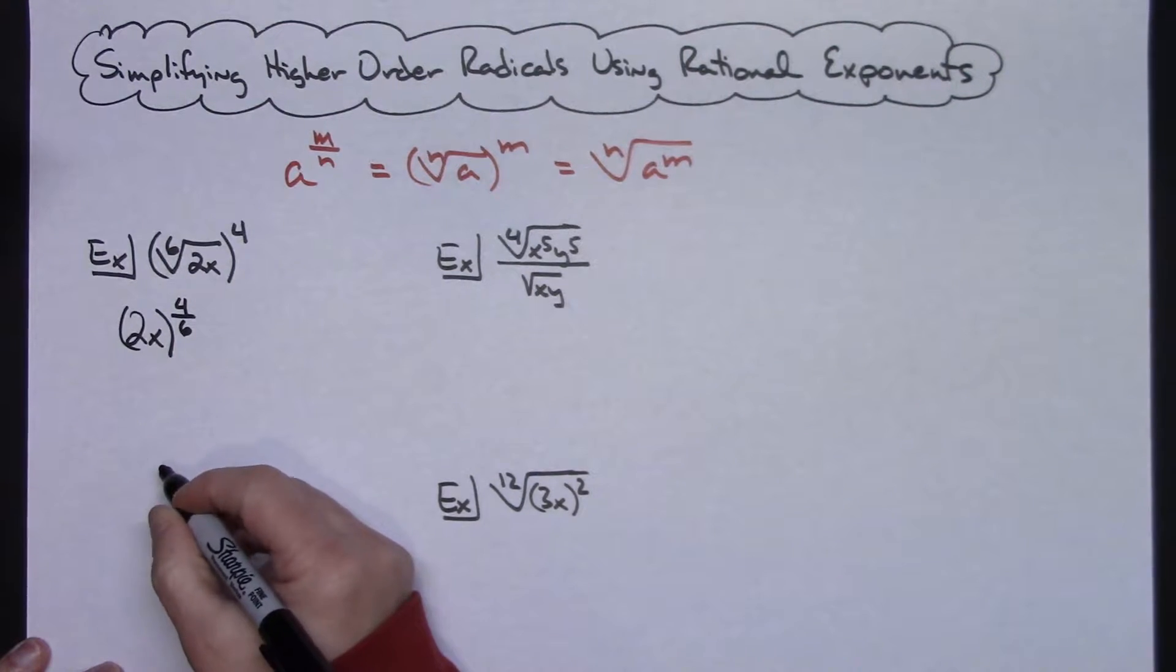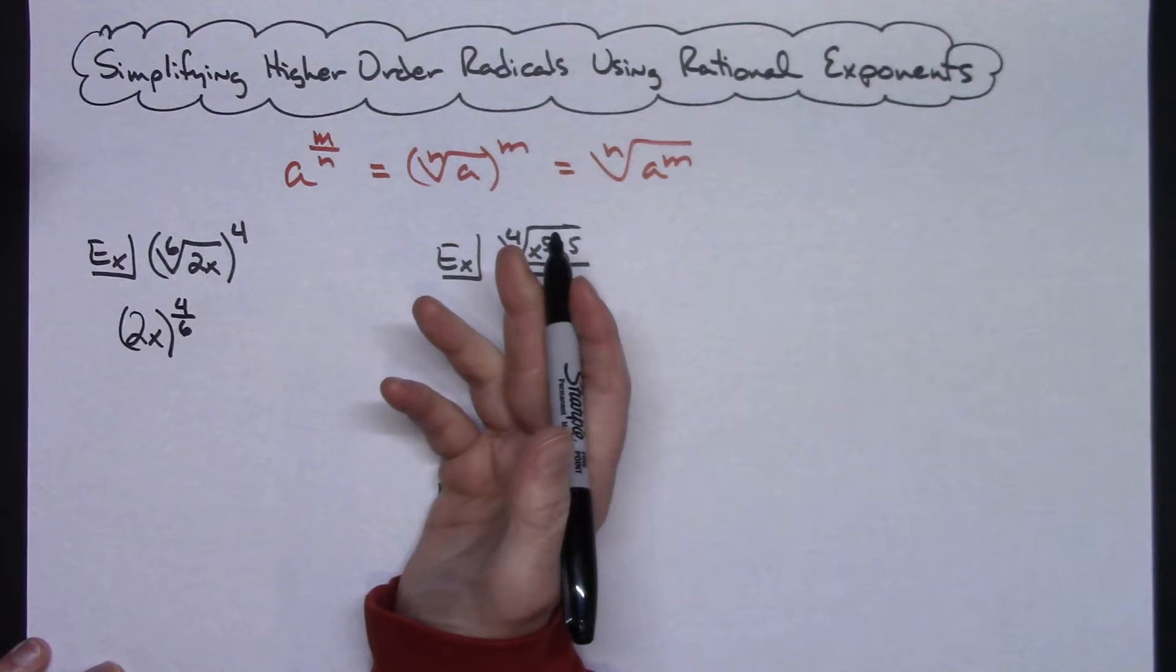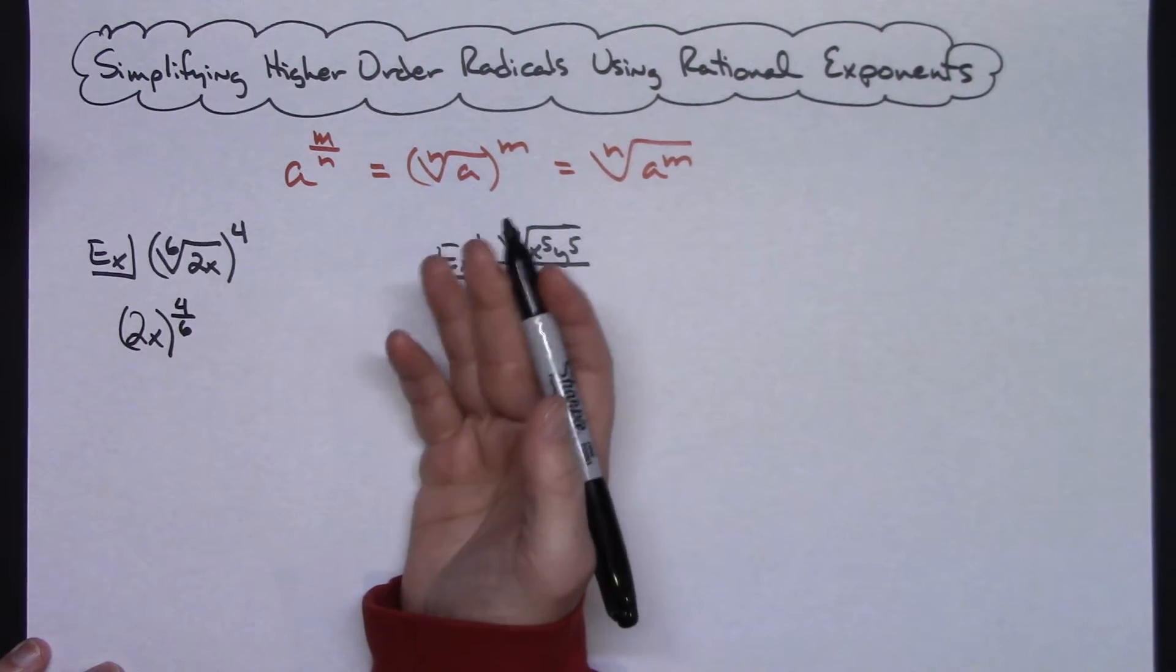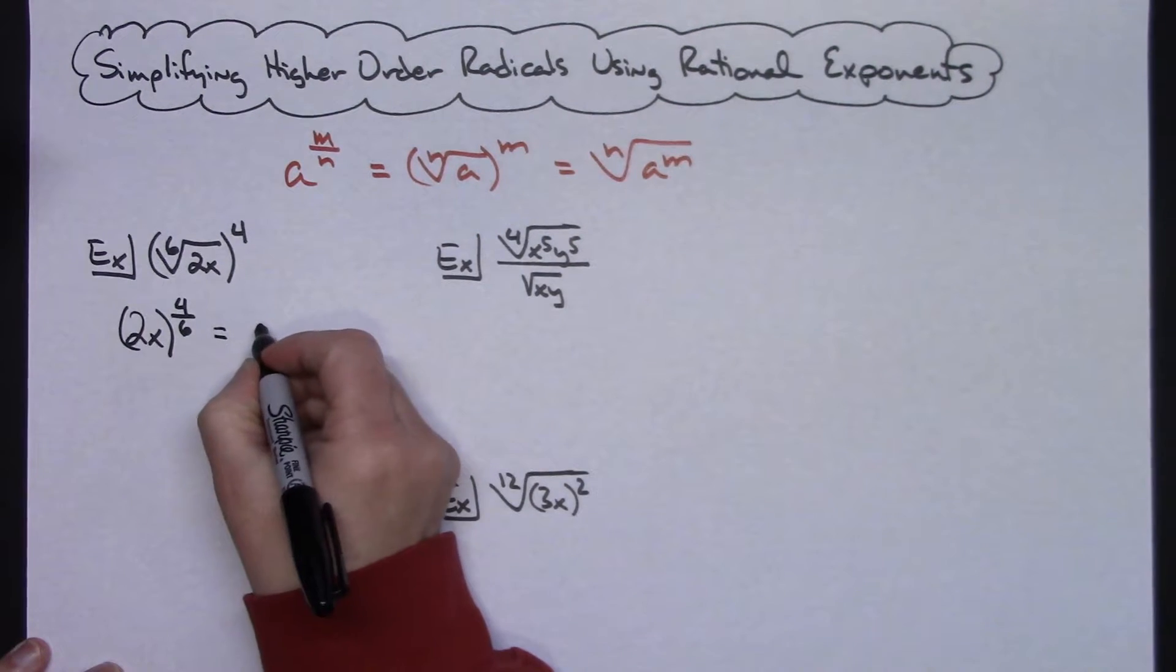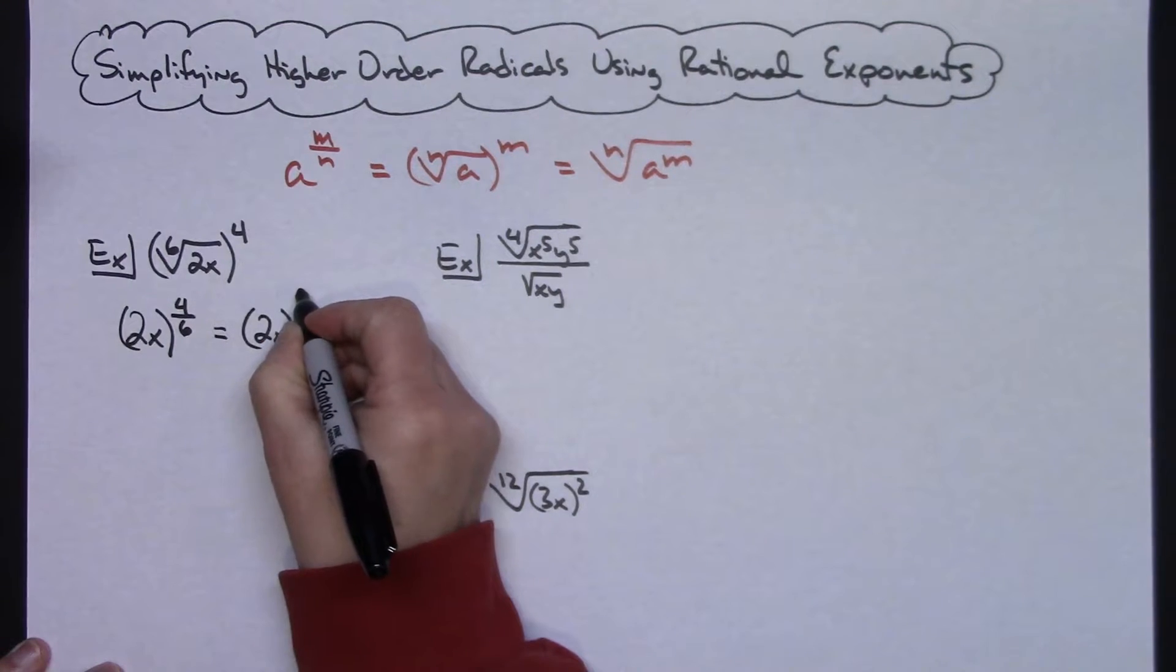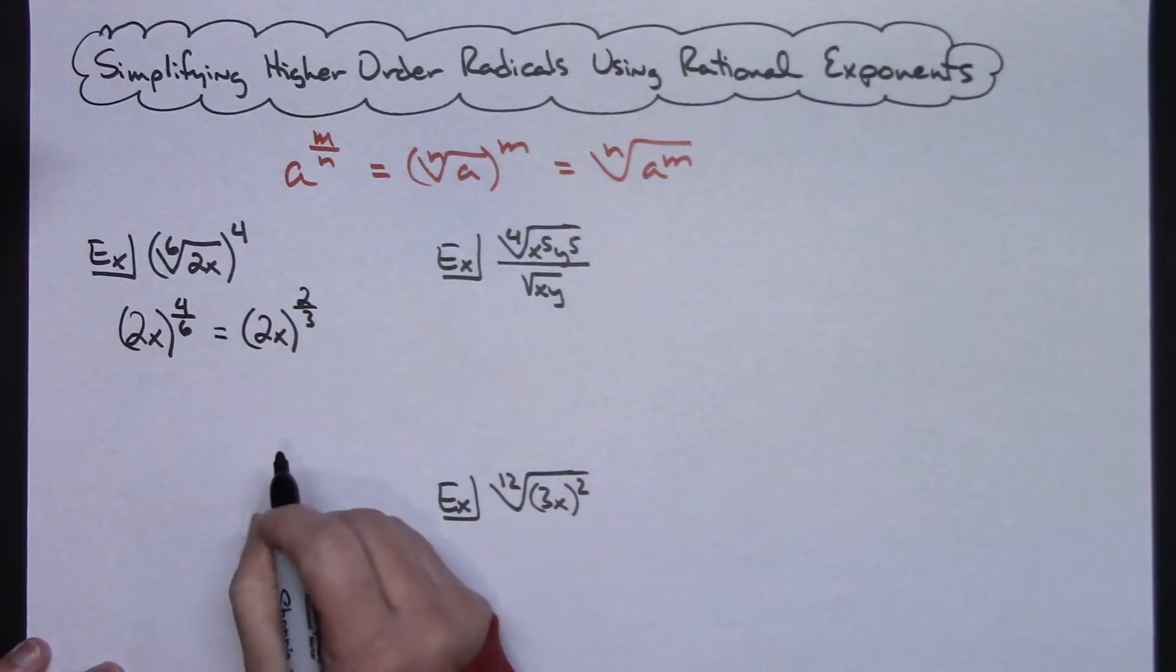Now to work with this rational exponent, since it's 4/6 and I can reduce that, I should probably do that. So I will have 2x raised to the 2/3.